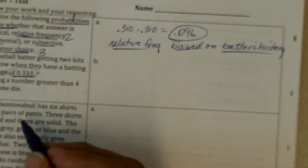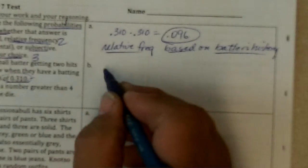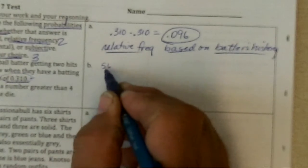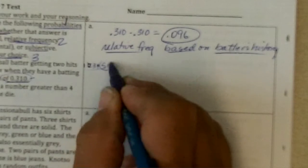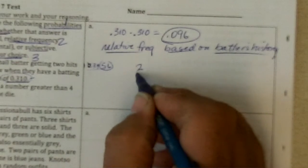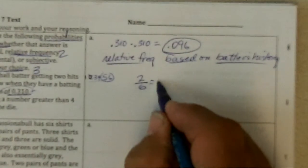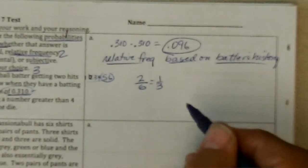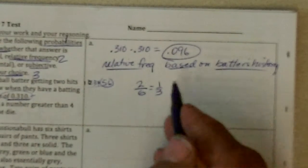Now, B, rolling a number greater than 4 on one die. Well, there's 5 and 6 out of 1, 2, 3, 4, 5, and 6. So that's 2 outcomes out of the 6 is the probability, or 1 out of 3, or 0.33333.